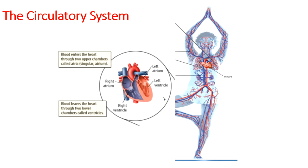The three main types of blood vessels are arteries, veins, and capillaries. Arteries carry blood away from your heart — remember that arteries carry blood away from the heart. Usually this blood is oxygen-rich and contains nutrients.